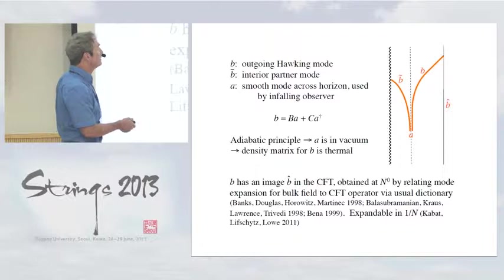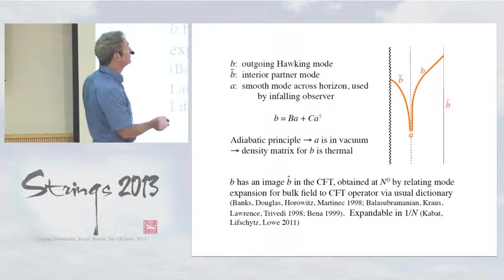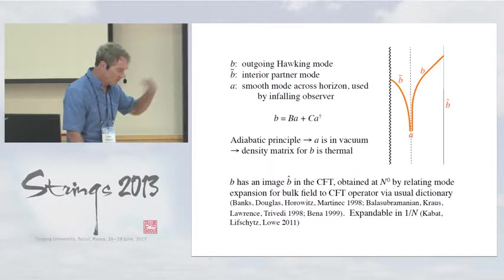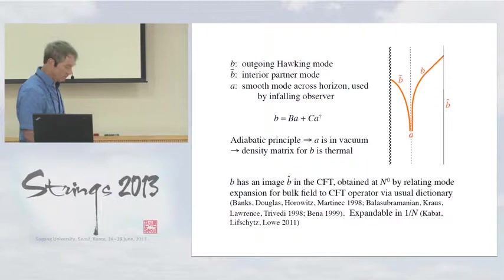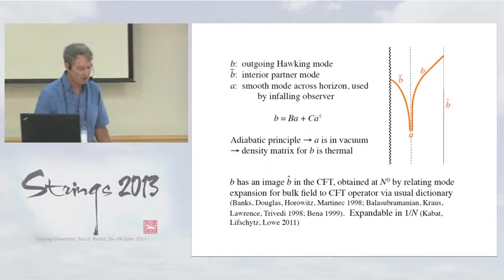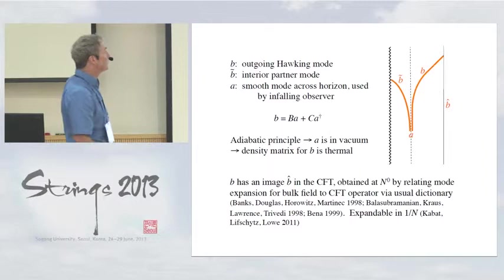Of course, because we're in anti-de Sitter space, anything in them, any excitations will bounce off the boundary and return to the black hole. But still, that doesn't change their identification here near the horizon. And of course, because there's a horizon, you can see those don't cover the whole space. So to cover the rest of the space, we need another set of modes, B tilde. Tilde means inside. But if you're an infalling observer, then you wouldn't want to use modes that start and stop abruptly at the horizon. You'd want to use a different set of modes that smoothly cross the horizon.